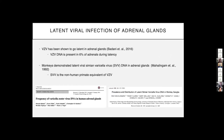Previous studies have shown that VZV DNA is present in 6% of adrenal glands during latency. In the non-human primate equivalent of VZV, simian varicella virus or SVV, there has also been proof of SVV DNA latent in adrenal glands. This is interesting because it evaluates latent viral infection of the adrenal glands.